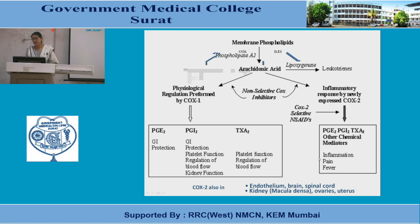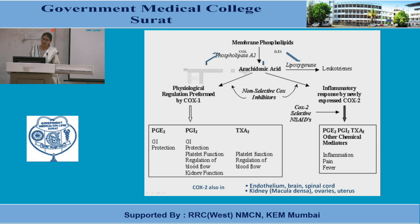COX-2 produces prostaglandin E2, I2, thromboxane A2, and other mediators, causing inflammation, pain, and fever — blockable by COX-2 selective NSAIDs. COX-1 physiological regulation through PGE2, PGI2, and thromboxane A2 provides GI protection, platelet function regulation, regulation of blood flow, and kidney function. Thromboxane A2 regulates platelet function and blood flow. COX-2 is also constitutively present in endothelium, brain, spinal cord, kidney, macula densa, ovaries, and uterus.